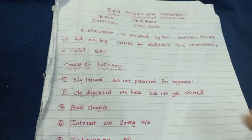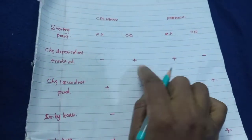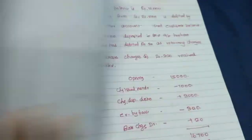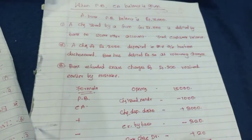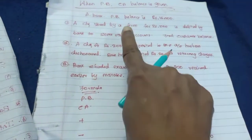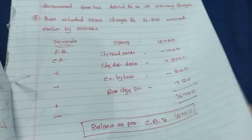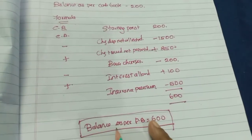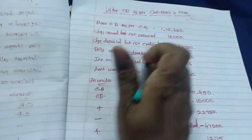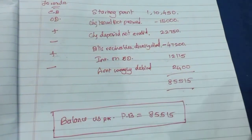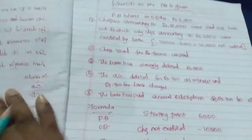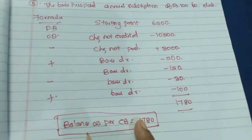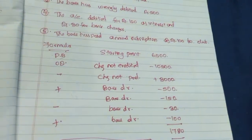In bank reconciliation statement, you must memorize the plus/minus formula. After memorizing the formula, you can solve all four types of problems: when passbook current account balance is given and you find cashbook balance; when cashbook current account balance is given and you find passbook balance; when OD as per cashbook is given and you find passbook balance; and when OD as per passbook is given and you find cashbook balance. These are all the expected problems in JAIIB accounting and finance for bankers.